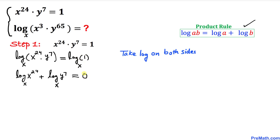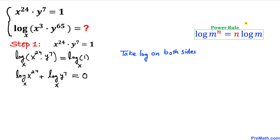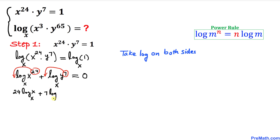Now let's apply the power rule — we can move the exponent 24 to the front, and likewise move the exponent 7 to the front as well. So this becomes 24 times log base x of x, plus 7 times log base x of y, equal to 0.